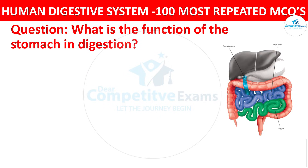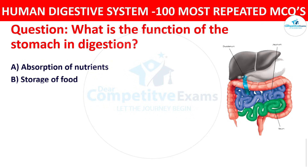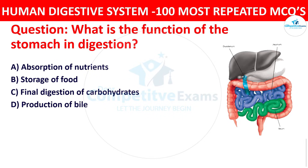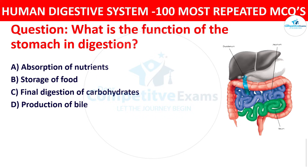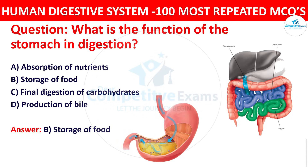Your options are absorption of nutrients, storage of food, final digestion of carbohydrates, or production of bile. The right answer is storage of food. The stomach stores food, initiates protein digestion, and releases it in controlled amounts to the small intestine.